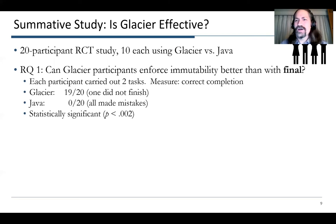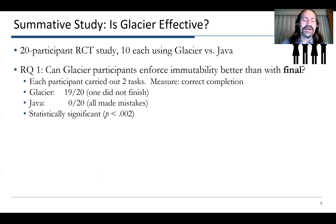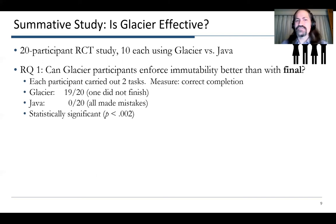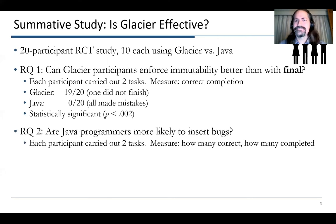Glacier, though — 19 out of 20 people were able to successfully complete the task, and that's a statistically significant result. Our second question was: are Java programmers more likely to insert bugs than Glacier users? For this, we had each participant carry out two tasks. One was based on the famous Java get-signers bug from an early version of Java, and we measured how many people completed the task correctly and how many completed it at all.